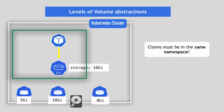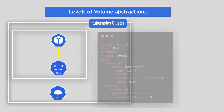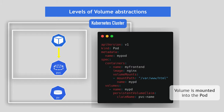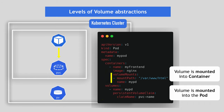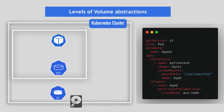Once the pod finds the matching persistent volume through the persistent volume claim, the volume is mounted into the pod. That volume can then be mounted into the container inside the pod. If you have multiple containers in the pod, you can decide to mount the volume in all containers or just some of them. The container and the application inside it can then read and write to that storage.